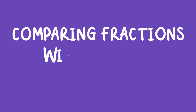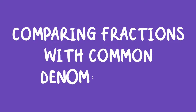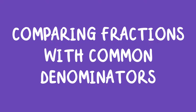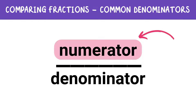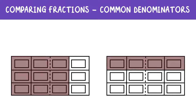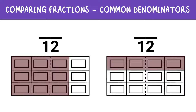First, let's see how we can compare fractions with common denominators. When comparing fractions with the same denominator, all you need to do is look at the numerators. Because the denominator is the same, you're just comparing how many pieces you have. Let's check out these two chocolate bars — each one is divided into 12 pieces, so the denominator for both is 12.